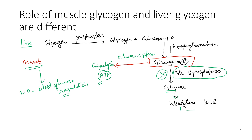So muscle glycogen — no blood glucose regulation; but liver glycogen — blood glucose regulation. Thank you.